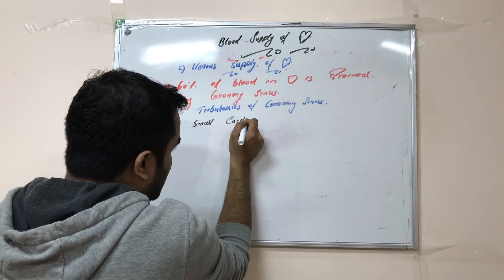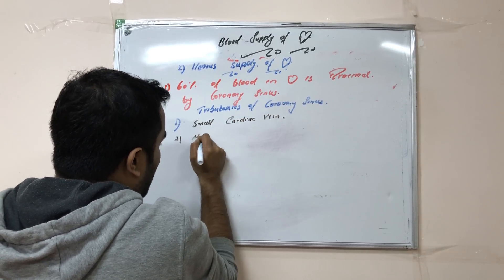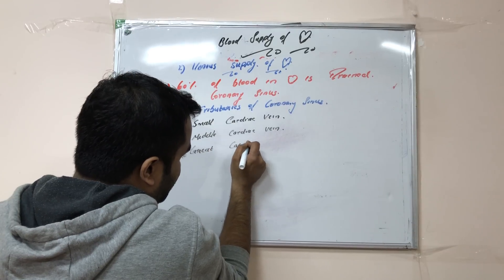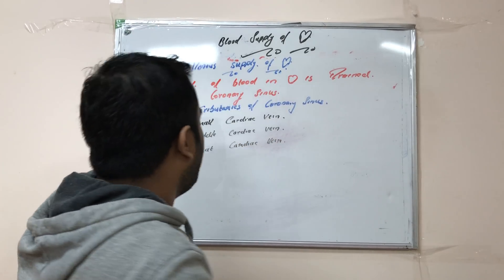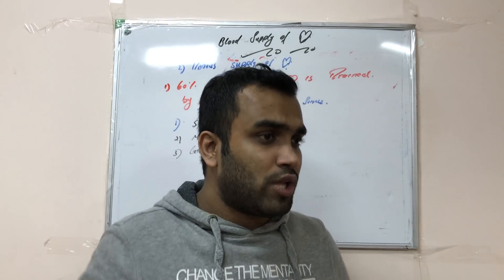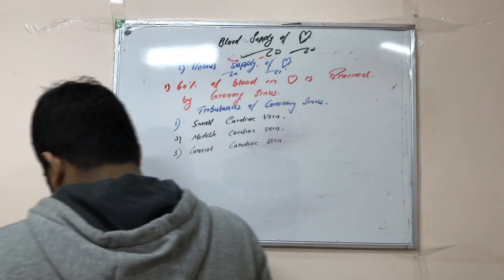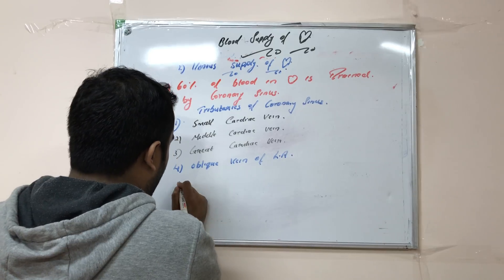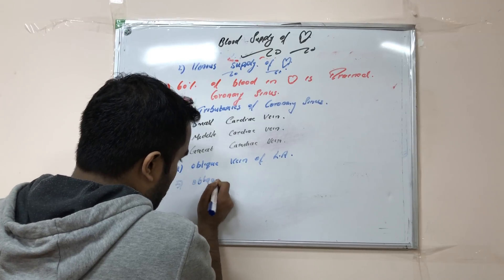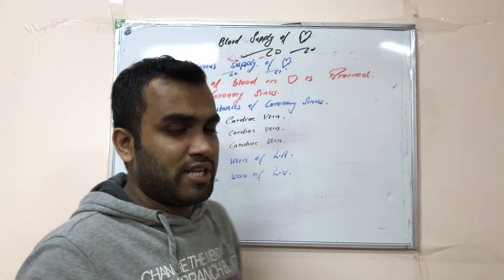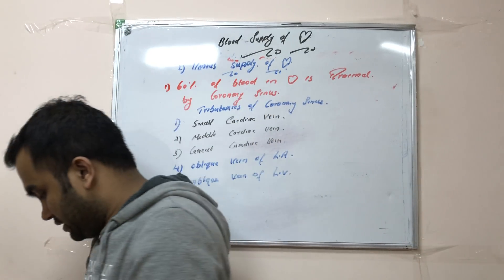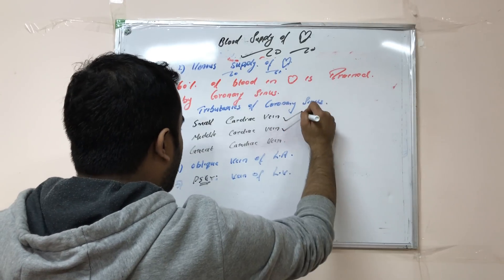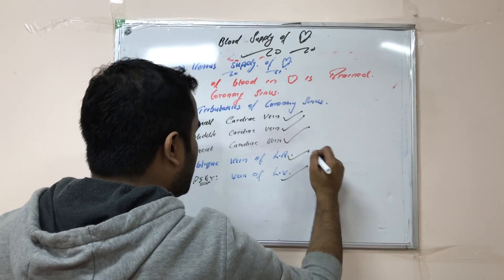The tributaries of the coronary sinus include the small cardiac vein, the middle cardiac vein, the great cardiac vein, the oblique vein of the left atrium, and the posterior vein of the left ventricle. These veins all drain blood from the heart into the coronary sinus.